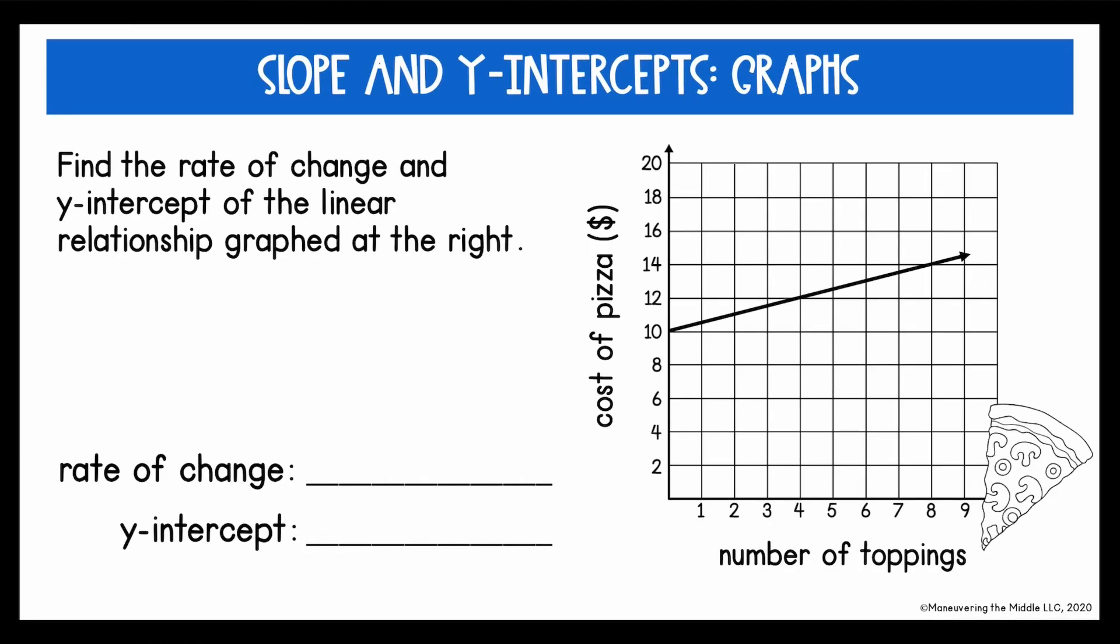Let's practice another graph. So find the rate of change and y-intercept of the linear relationship graphed at the right. So for the rate of change, which again will always just be equal to the slope, I'll compare the rise over the run. And look carefully at your intervals because on the y-axis this time, we're counting by twos. So for my rise, this is two. And then for my run, one, two, three, four.